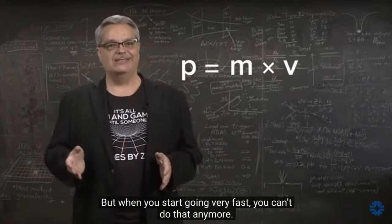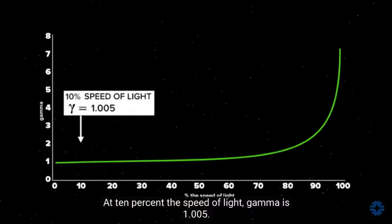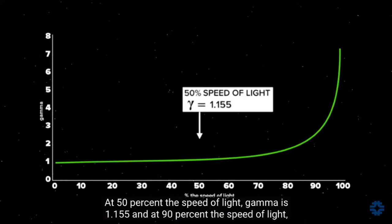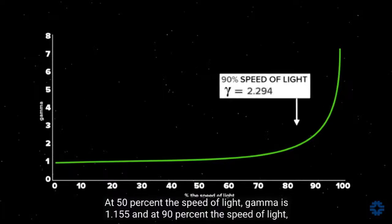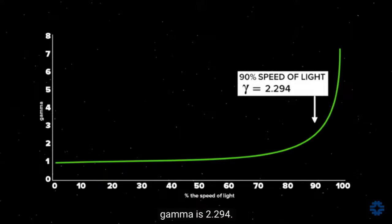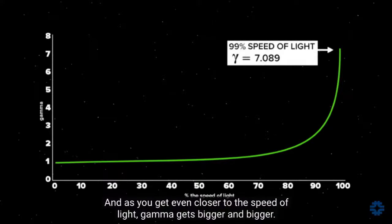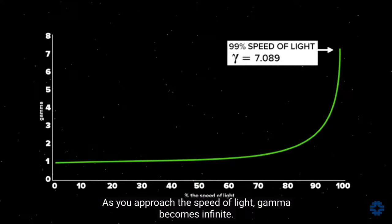When you start going very fast, you can't drop gamma from the equation. At 10% the speed of light, gamma is 1.005. At 50% the speed of light, gamma is 1.155. At 90% the speed of light, gamma is 2.294. At 99% the speed of light, gamma is 7.089. As you approach the speed of light, gamma becomes infinite.